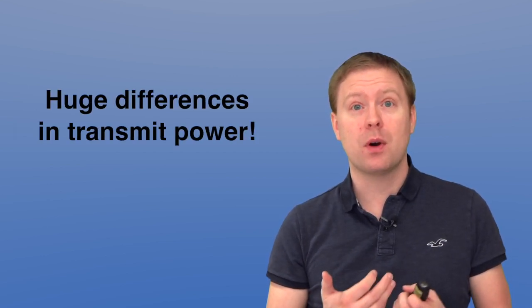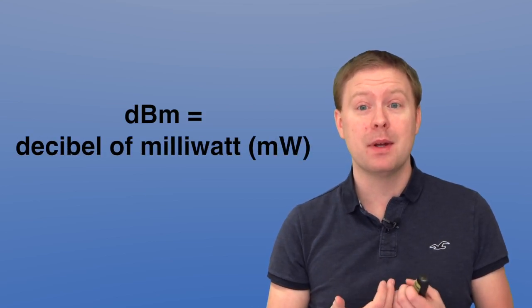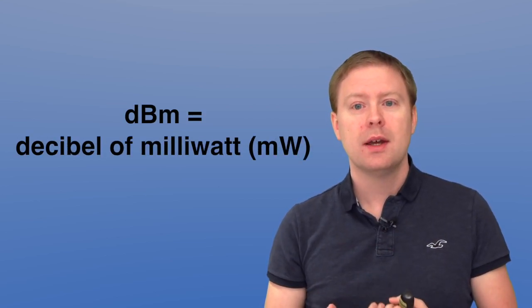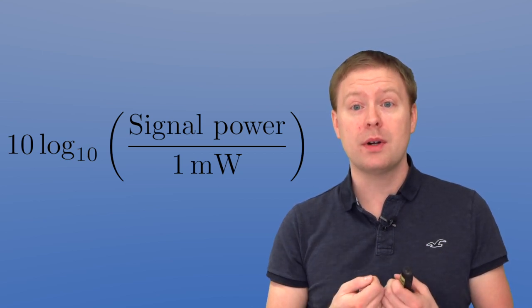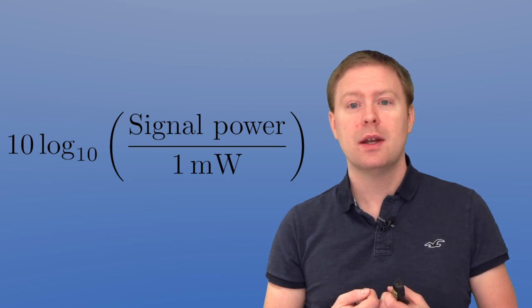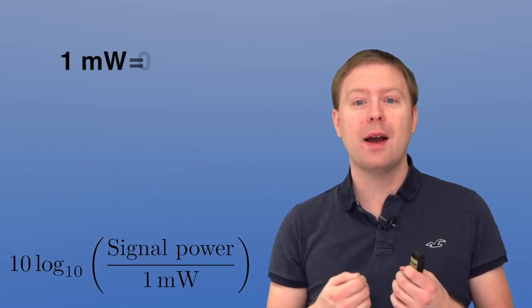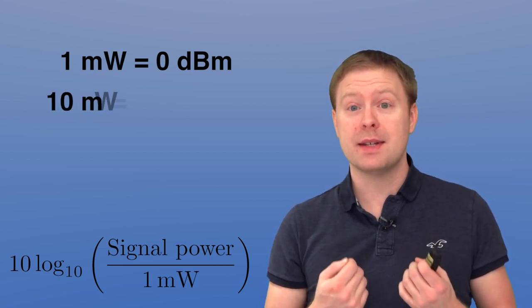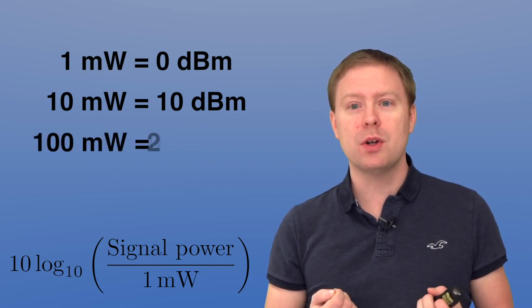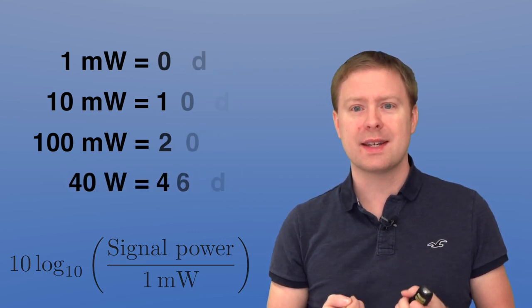Since we have these huge differences in power from one milliwatt up to maybe 40 watts, we usually write these types of powers using decibel scale using something called dBm, that is decibel of milliwatt. That means that we take 10 times the logarithm with base 10 of the signal power that we're transmitting and divide that with one milliwatt, and that gives us some kind of reference power compared to one milliwatt. So if you have one milliwatt of power, the result becomes zero dBm. If you have 10 milliwatt you get 10 dBm. If you have 100 milliwatt you get 20 dBm, and if you have 40 watts you go all the way up to 46 dBm.